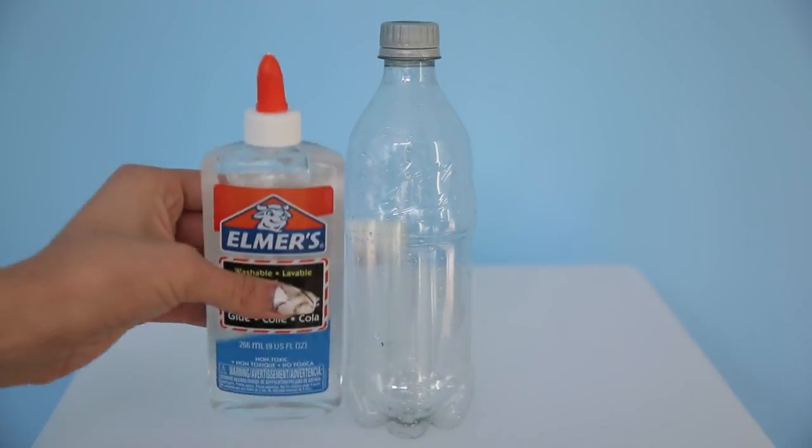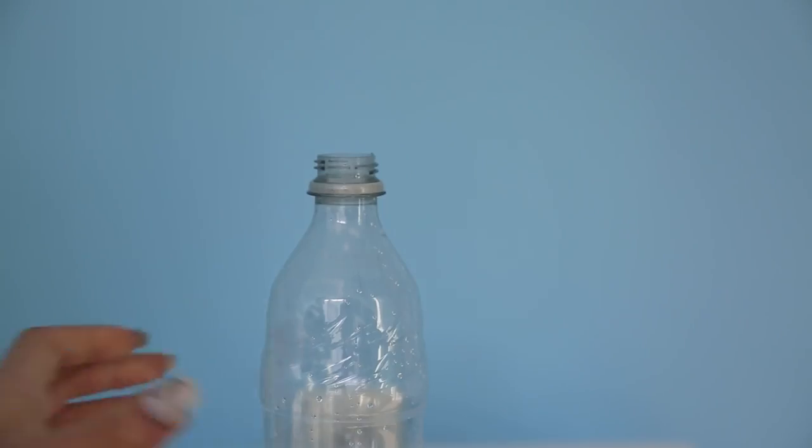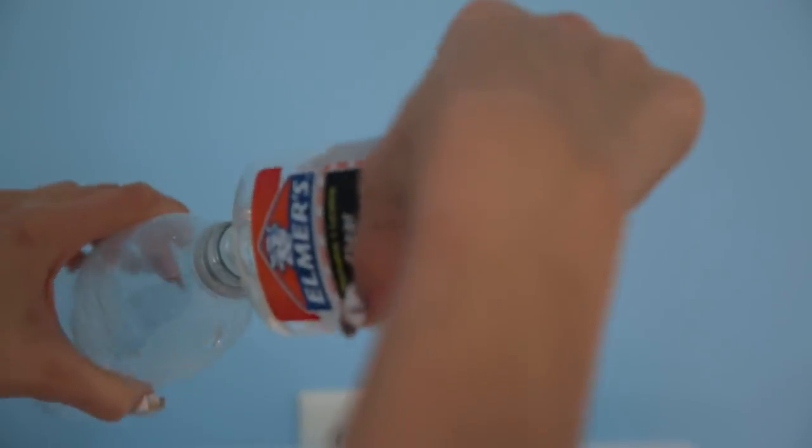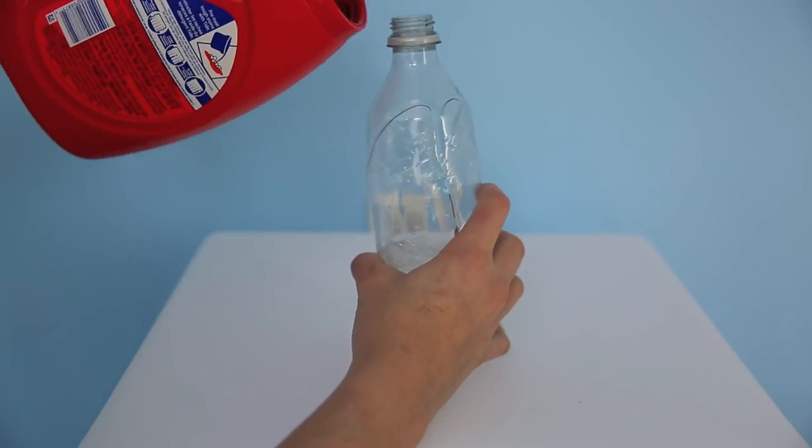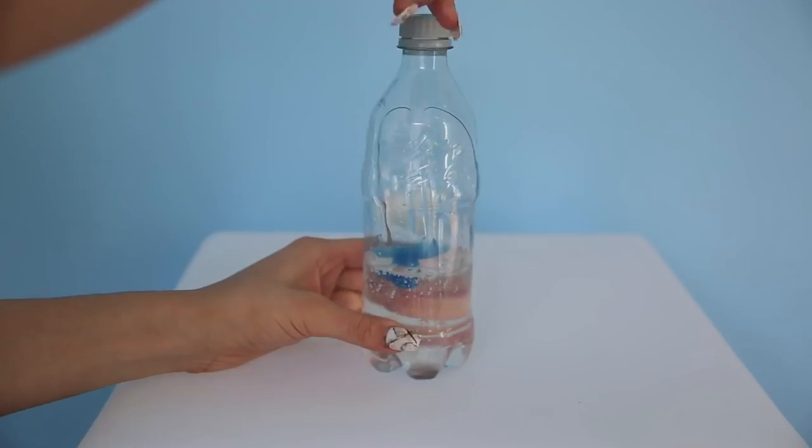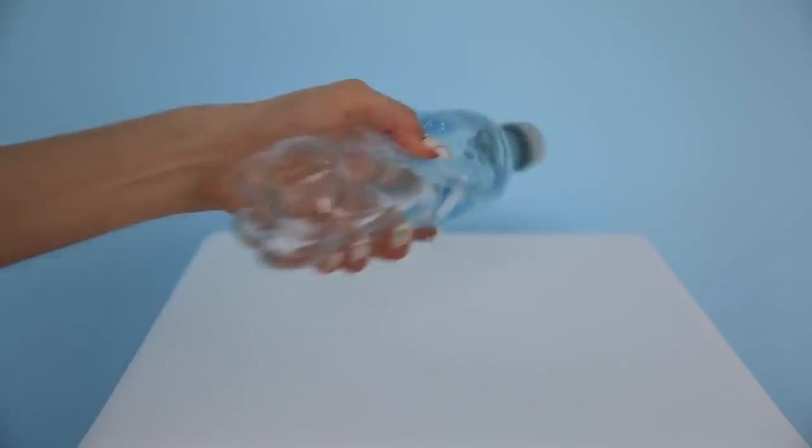For the squishy light bulb, take an empty bottle, clear school glue, and laundry detergent. Now pour all the clear school glue into the bottle and add a dash of laundry detergent. And shake that up and that's going to turn into slime.